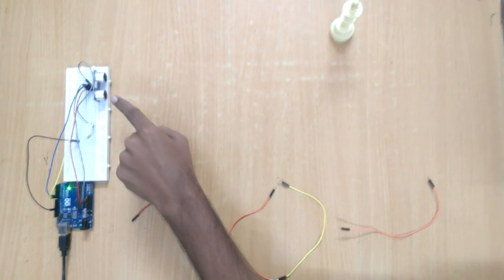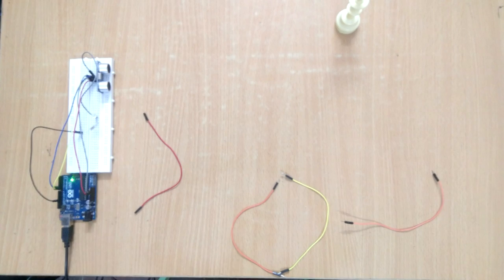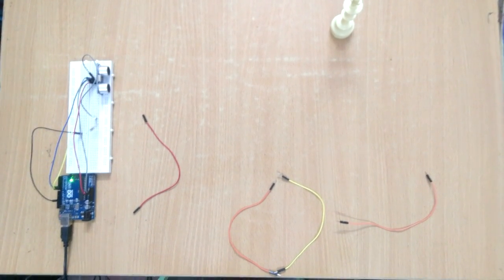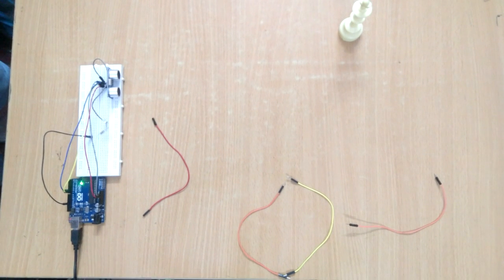Here we are introducing an ultrasonic sensor which intimates us when a borderline is crossed. We have a power supply for Arduino, and Arduino is connected to ultrasonic sensor, and in turn LED is connected to it.